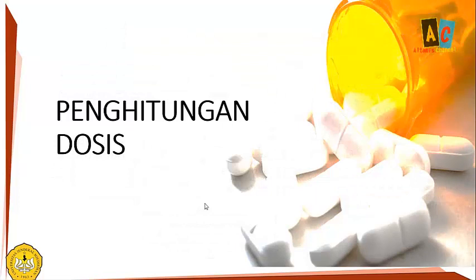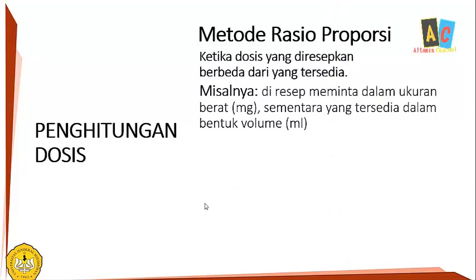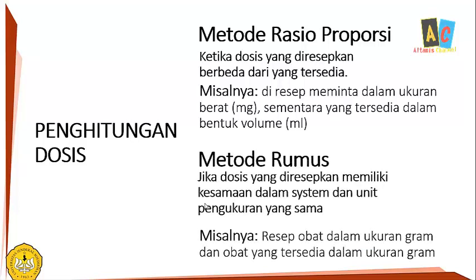Kita sampai ke penghitungan dosis, segmen terakhir dari perkuliahan kali ini. Ada dua cara. Ada metode rasio proporsi, digunakan ketika dosis yang diresepkan berbeda dari yang tersedia. Misalnya di resep meminta dalam ukuran berat miligram sementara yang tersedia adalah dalam bentuk volume mililiter, sehingga harus dicari berapa mililiter yang diperlukan. Kemudian ada metode rumus, digunakan jika dosis yang diresepkan memiliki kesamaan dalam sistem dan unit ukuran yang sama. Misalnya resep obat dalam ukuran gram dan obat yang tersedia dalam ukuran gram.